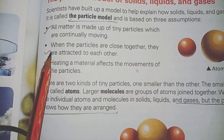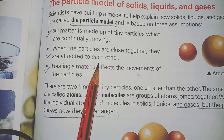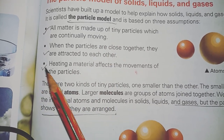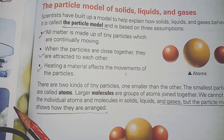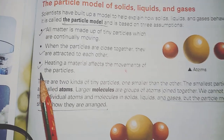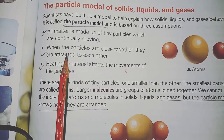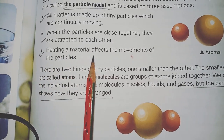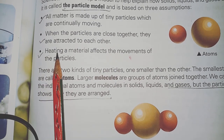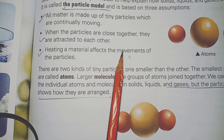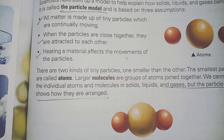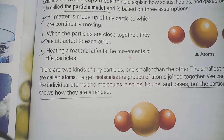The second assumption is that when particles are close to each other, they are attracted to each other. When the particles of any object are together, they attract each other and combine, which is why substances can take the shape of a solid. The third assumption is that heating a material affects the movement of the particles — when you heat up any object, it changes the movement of its particles.